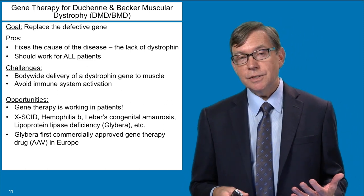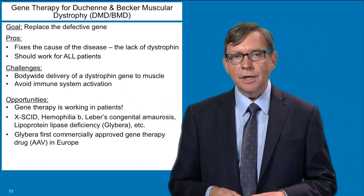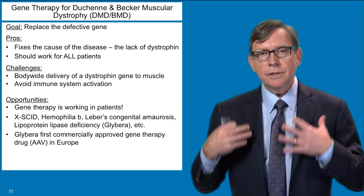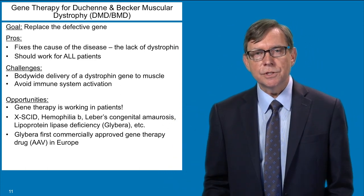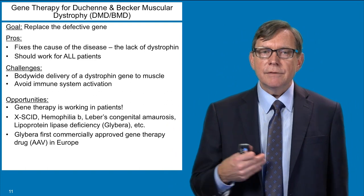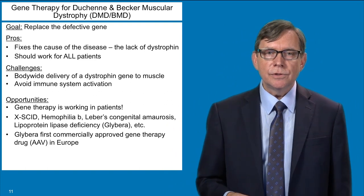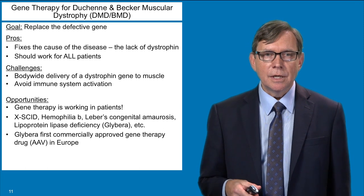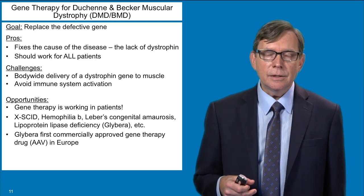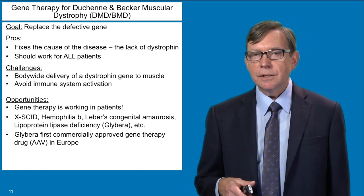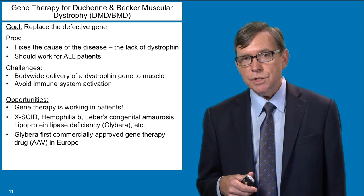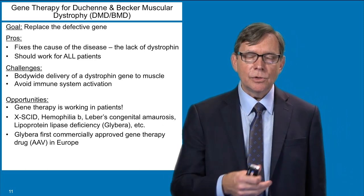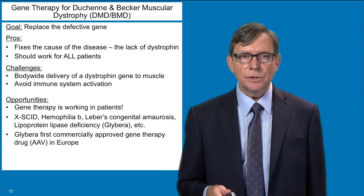That's obviously easier said than done. There are many challenges — dystrophin is needed in all of the muscles of the body, so you need a way to deliver a new dystrophin gene throughout the body to all the important muscles, and you need to do that in a way that does not activate the body's immune system, leading to rejection of whatever therapeutic delivery vehicle you may be using.